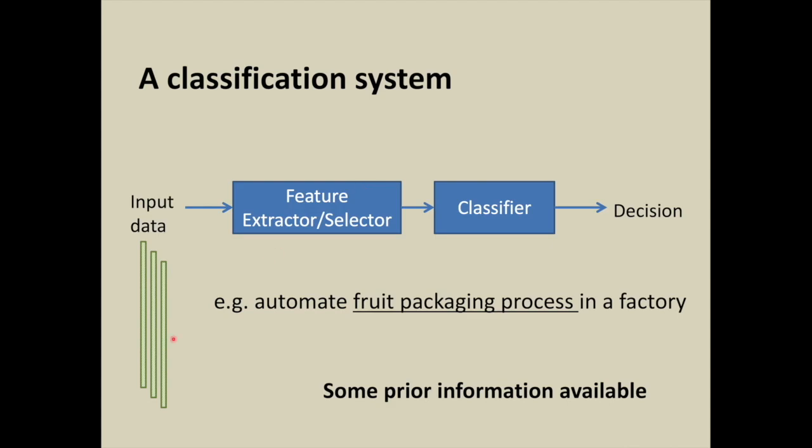So how does this system work? Input data is processed via feature selector or feature extractor, which extracts the raw data into some meaningful features. This will give a feature vector for each sample. Therefore, a fruit is represented by a d-dimensional feature vector. These vectors are then processed by the classifier for decision making at the output.